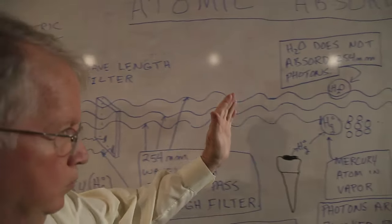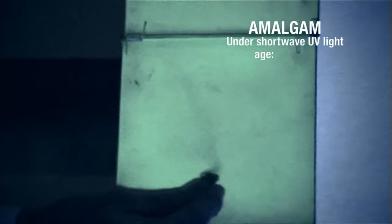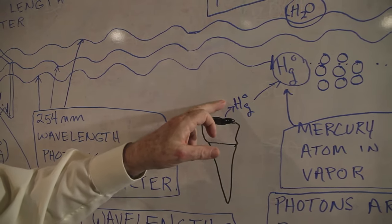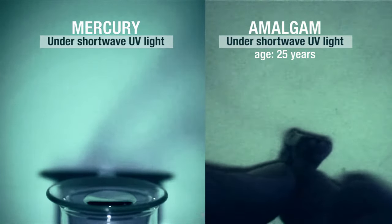However, if you place in front of that lamp an amalgam in a tooth and you activate that tooth by brushing it, then millions and millions of atoms of mercury come off of that tooth.